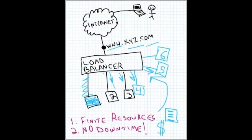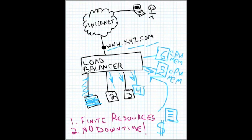You can use least connected, where the load balancer finds which server has the fewest number of active connections and sends traffic there. Or you can go further with least loaded — querying servers for their CPU load and memory usage, then directing traffic to the server with the most free resources. For example, if servers two through five are busy but six has the most resources free, traffic goes to six until things balance out. That's a quick overview of load balancers and what they do.